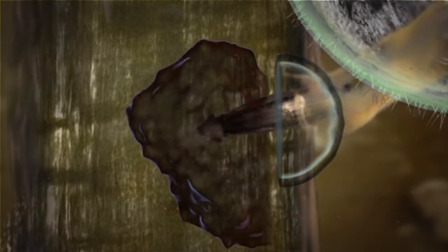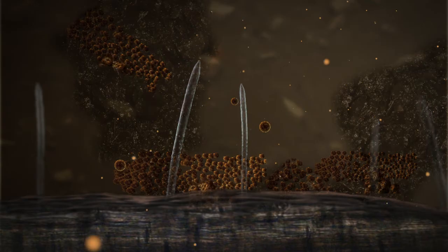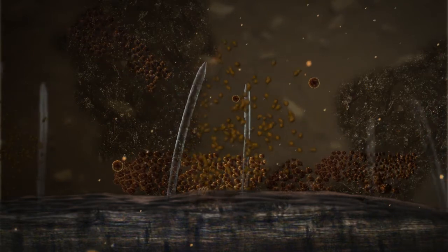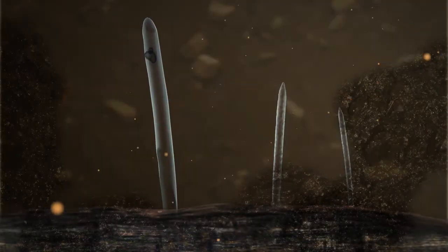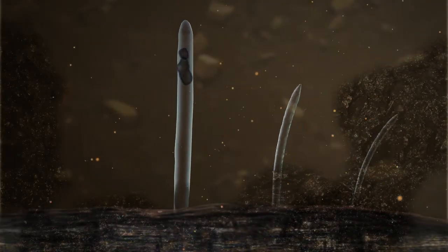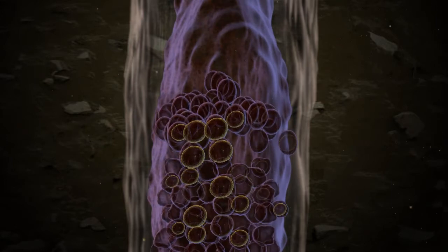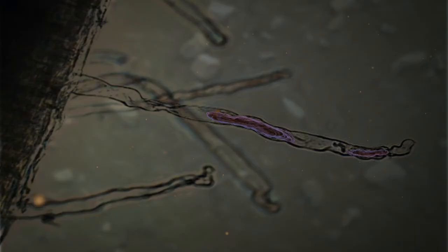The more resting spores that are present near the roots, the more root hairs become infected. Once inside a root hair, the zoospore develops into an amoeba-like structure called a plasmodium. The plasmodium grows rapidly and matures within a few days, and then produces new zoospores that are released back into the soil environment.